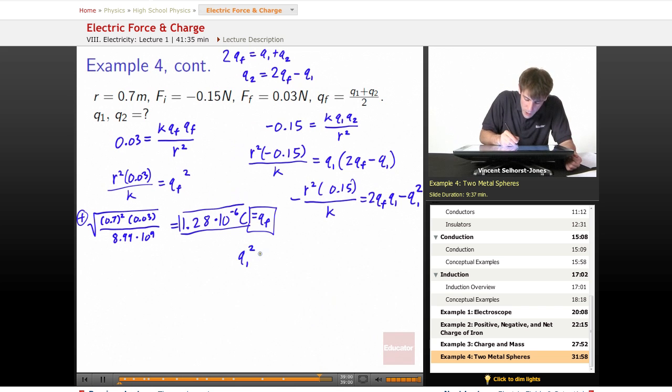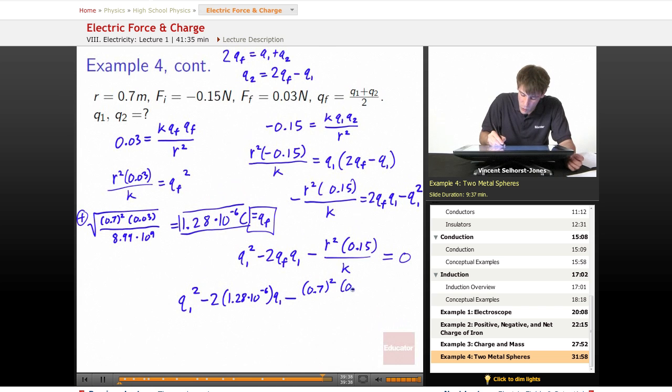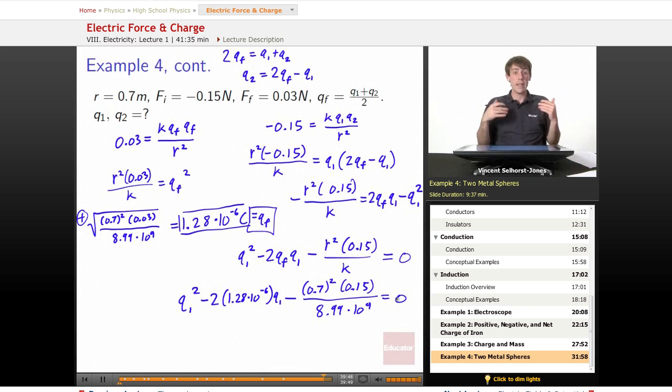So we've got Q1 squared. We keep moving things over because we want to have this equal to zero minus two QF Q1 minus R squared 0.15 over K. Let's substitute in all the values we know and it equals zero. We've got an equation here. So we substitute in all the values we know. Q1 squared minus two Q final was 1.28 times 10 to the negative sixth Q1 minus R squared 0.7 squared 0.15 over the electrostatic constant.